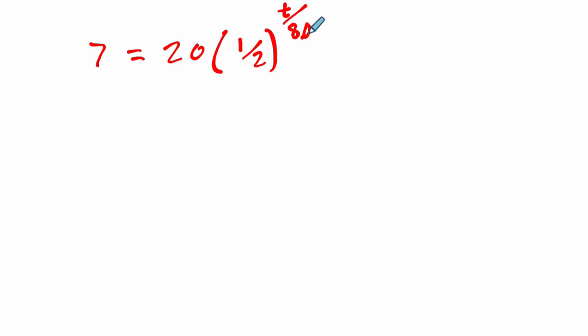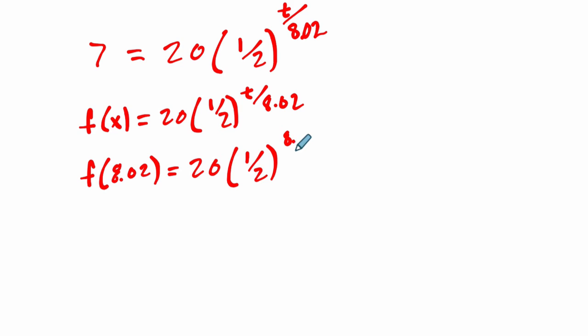In this case, T is being divided by 8.02 to account for the fact that the half-life is every 8.02 days. In other words, you won't get exactly half. Let me show you what I mean. Let's say we call this f(x), 20 times 1/2 to the T divided by 8.02. T is the number of days. So if we plug in exactly 8.02 days, that would be 20 times 1/2 to the 8.02 divided by itself. What's 8.02 divided by itself? It's 1. So it would be 20 times 1/2 to the first, which is 20 times 1/2, which is 10. It's the half-life.